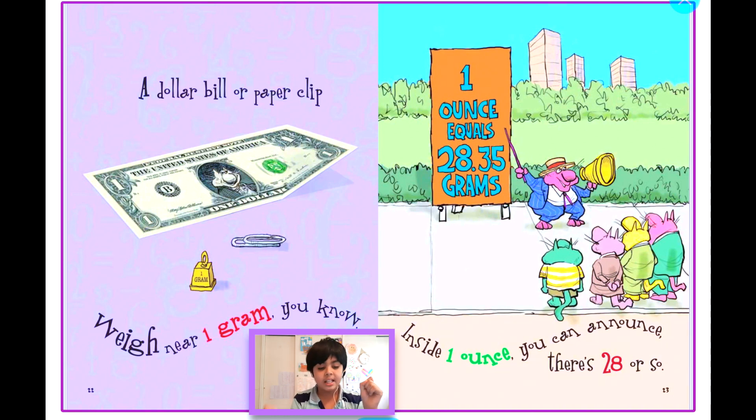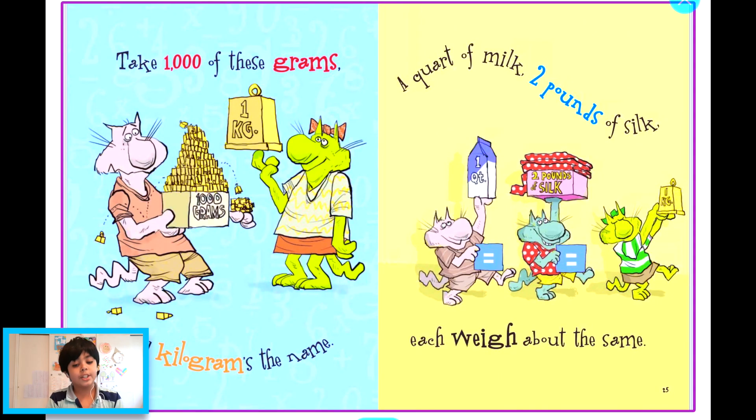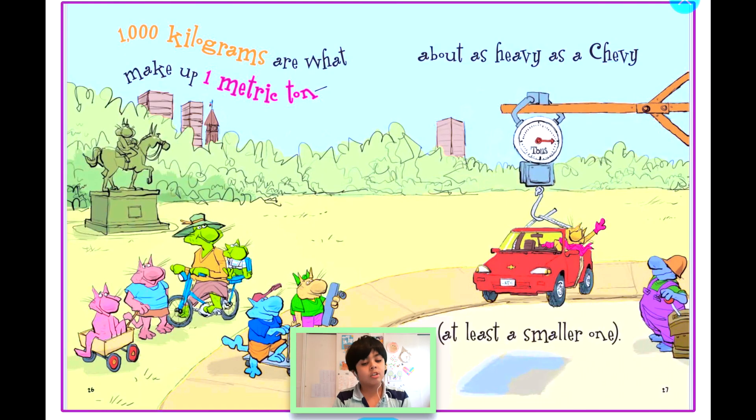So it says one ounce equals 28.35 grams. Okay, nice to know. Take 1,000 of these grams—kilograms is the name. A quart of milk, two pounds of silk, each weigh about the same. 1,000 kilograms are what make up one metric ton, about as heavy as a Chevy, at least a smaller one.